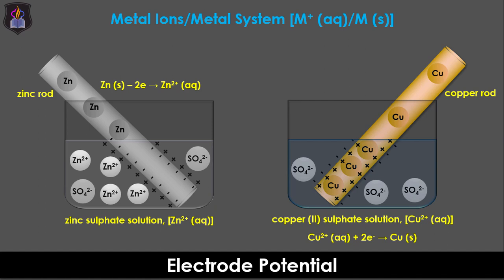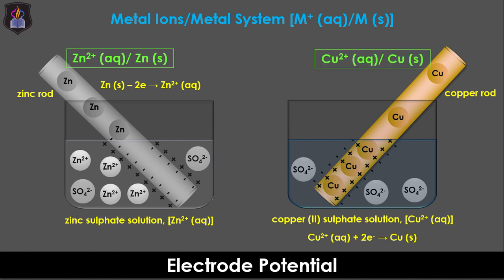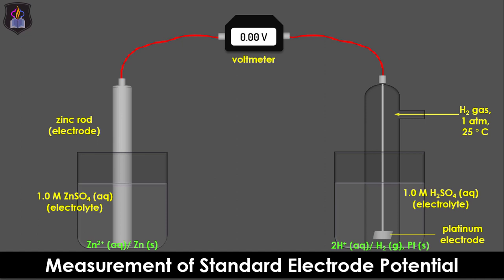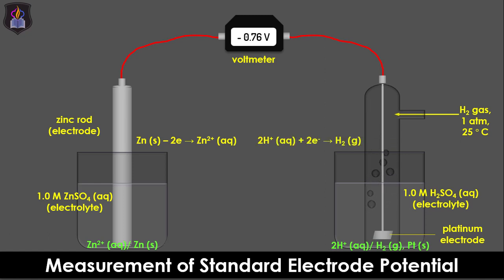So for the zinc electrode, it is a zinc-ions zinc metal system or half cell, and for the copper electrode, it is a copper(II)-ions copper metal system or half cell. If we connect the zinc half cell under standard conditions to a standard hydrogen electrode — used for measuring the standard electrode potentials of elements and having an arbitrary value of 0.00 volts — electrons will flow from the zinc electrode to the hydrogen electrode, and the reading on the voltmeter will be minus 0.76 volts. This value, which is the reduction potential of the zinc electrode, implies that zinc has the potential of losing electrons to hydrogen ions because it is more electropositive than hydrogen in the electrochemical series.